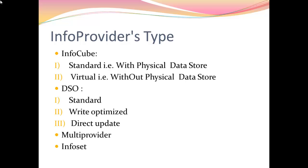Another info provider we have is DSO. It is further subdivided into three types: standard, write optimized, and direct update. Standard DSO is a plain two dimensional table that holds three different types of tables - active data table, new data table, and change lock table - whereas write optimized DSO has only one table, the active data table. Direct update DSO is used when we are implementing ADP, that is analysis design process.